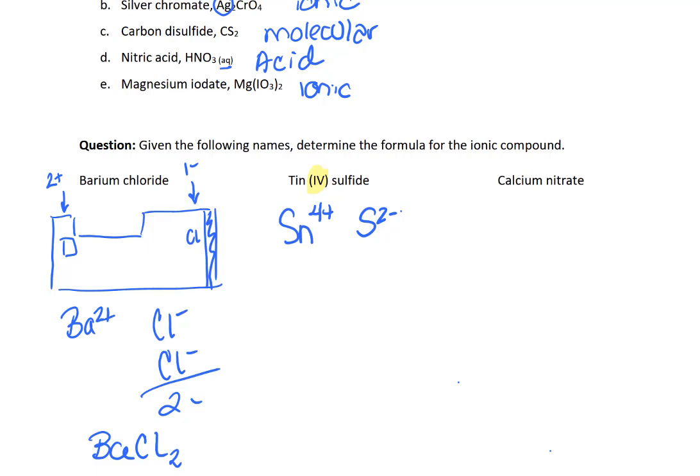So then you need to know that sulfide is in the column of the periodic table that forms a two minus, and now what we need to do is figure out the ratio between the ions that is going to form a neutral compound. So it's almost like you're looking for the least common multiple. So the least common multiple between two and four is four. So you need one tin and we don't put the little one right there. So I'm going to go in and erase that, but we do put the two subscript to tell us that we have two of them.